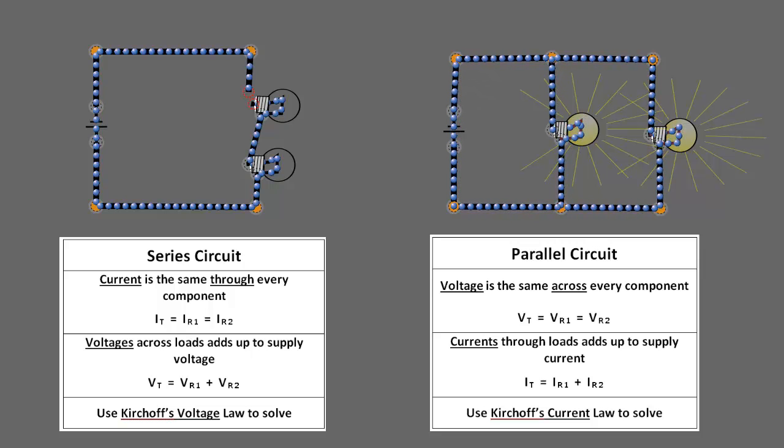For series circuits, we said the current was the same throughout the circuit. But in a parallel circuit, the voltage is the same throughout the circuit. So both R1, or lamp 1, and R2, or lamp 2, have the same voltage across them. That's why they're brighter than what we saw in the series circuit.